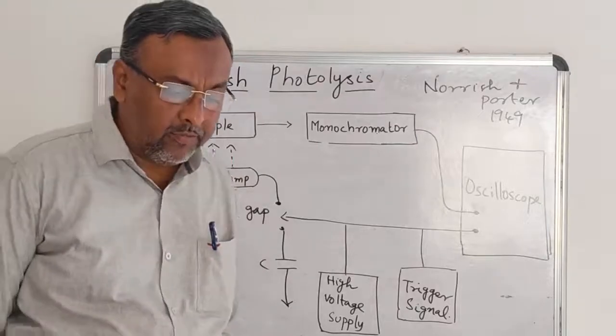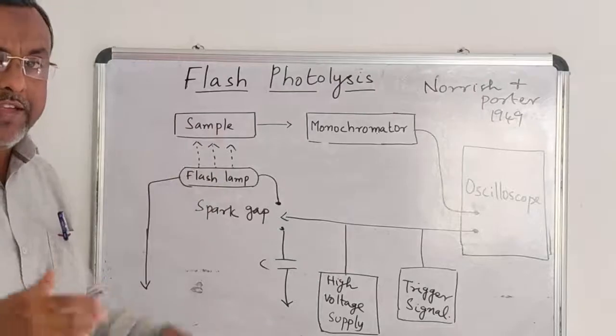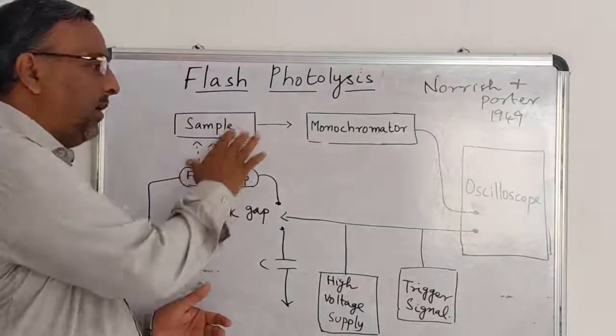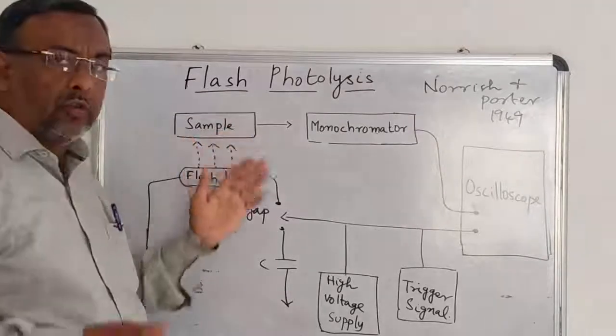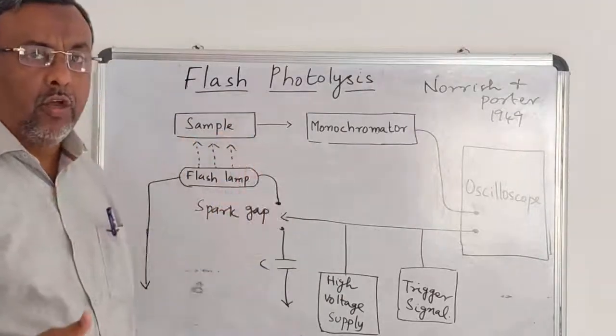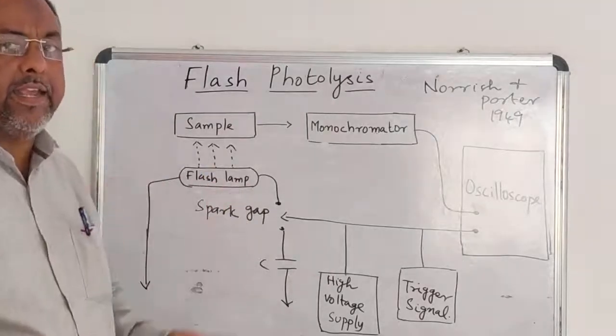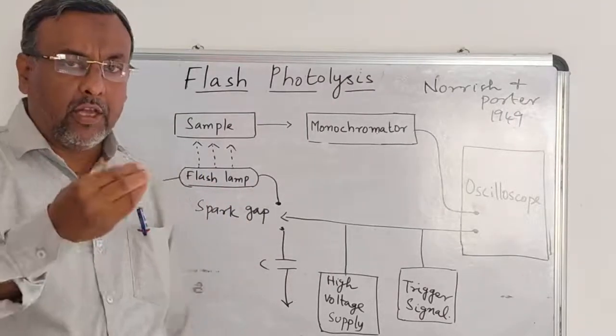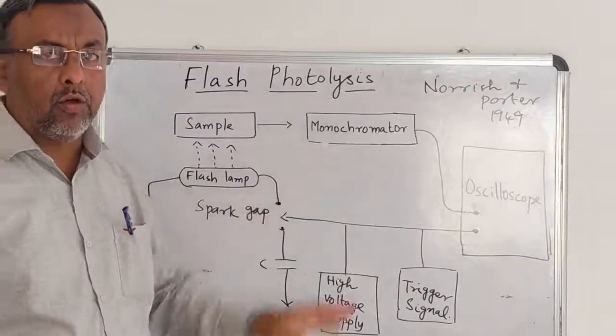What happens, as a result, many number of excited intermediates are formed. Almost most of the reactants go to the excited stage. When after getting excited, when they come to the ground stage, they induce the signal to the monochromator.